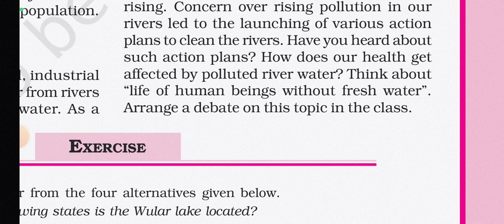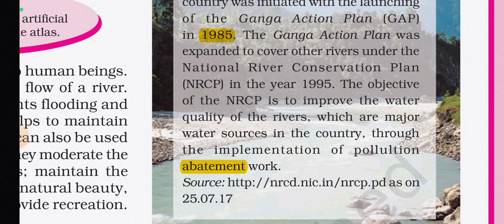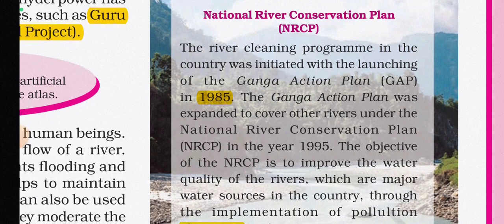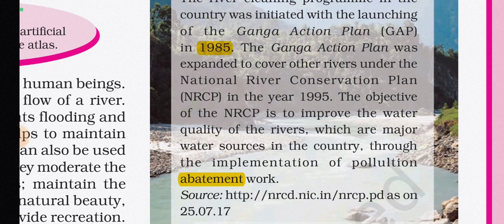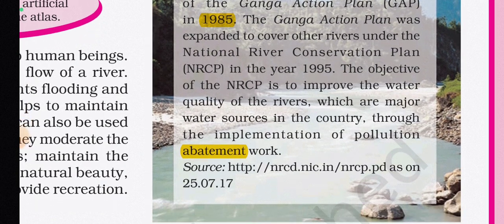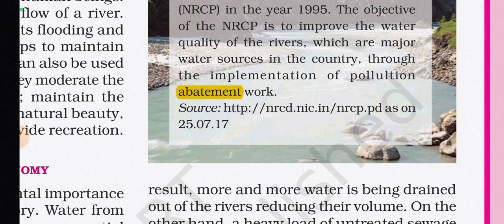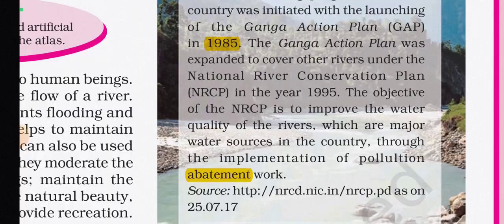Concern over rising river pollution led to the launching of various action plans. The National River Conservation Plan (NRCP) river cleaning program was initiated with the launching of the Ganga Action Plan (GAP) in 1985. The GAP was expanded to cover other rivers under the National River Conservation Plan (NRCP) in 1995. The objective of the NRCP is to improve the water quality of major rivers through the implementation of pollution abatement works.